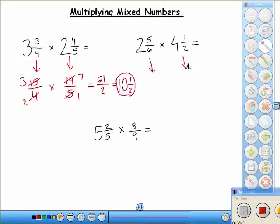We're going to have to convert these. So let's use our shortcut. 6 times 2, 12. 12 plus 5 is 17. 17 over 6 times 2 times 4, 8. 8 plus 1, 9 over, leave the denominator the same.